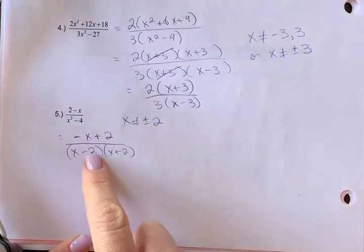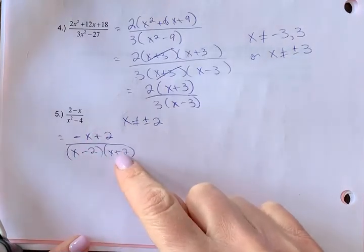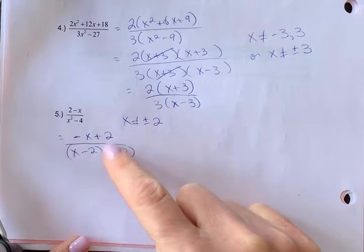We can do a quick check on that. Two minus two is zero, so that shows how that denominator would be zero. Now let's look at cancelling. These are not identical. You don't have a negative x down here, so they don't cancel.